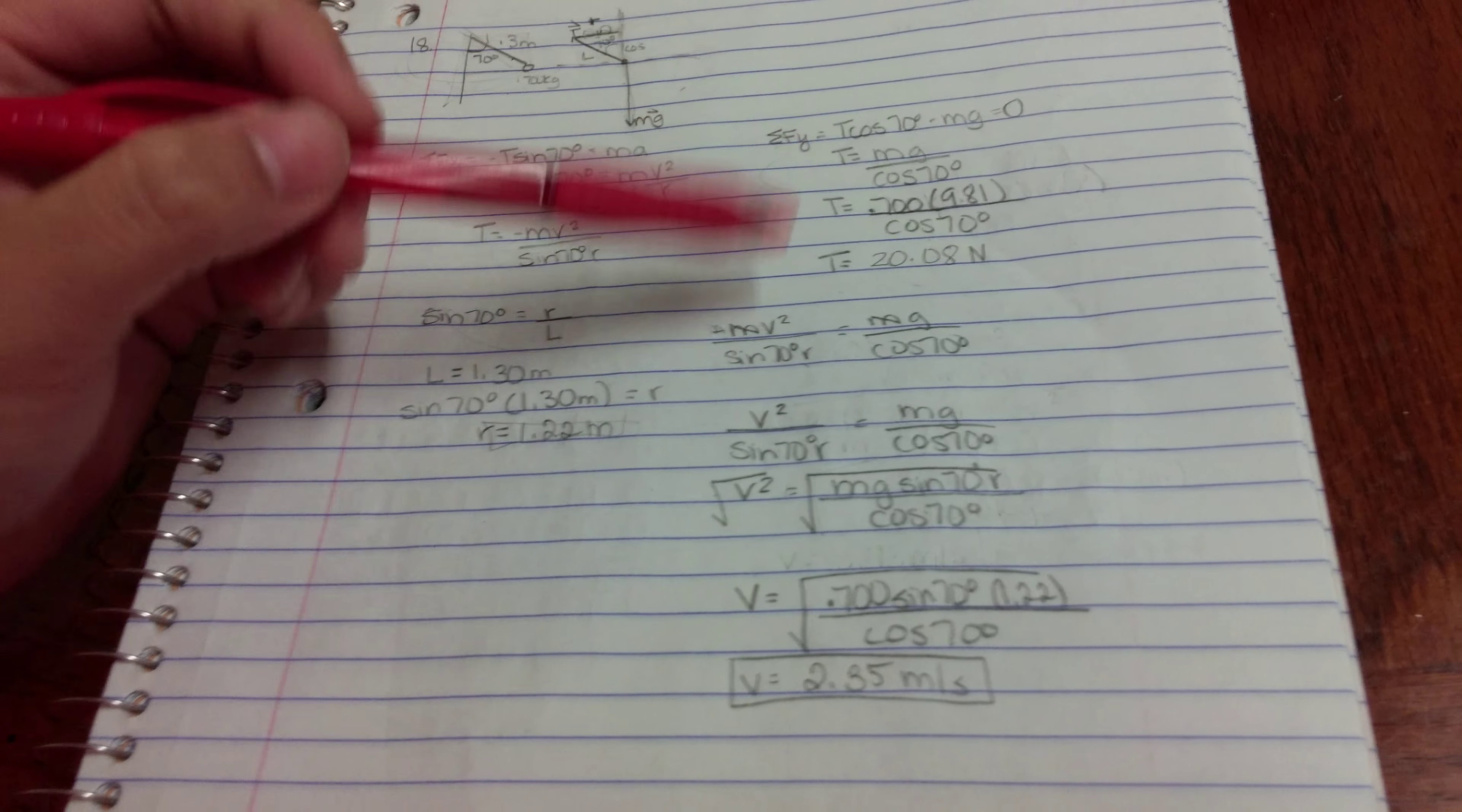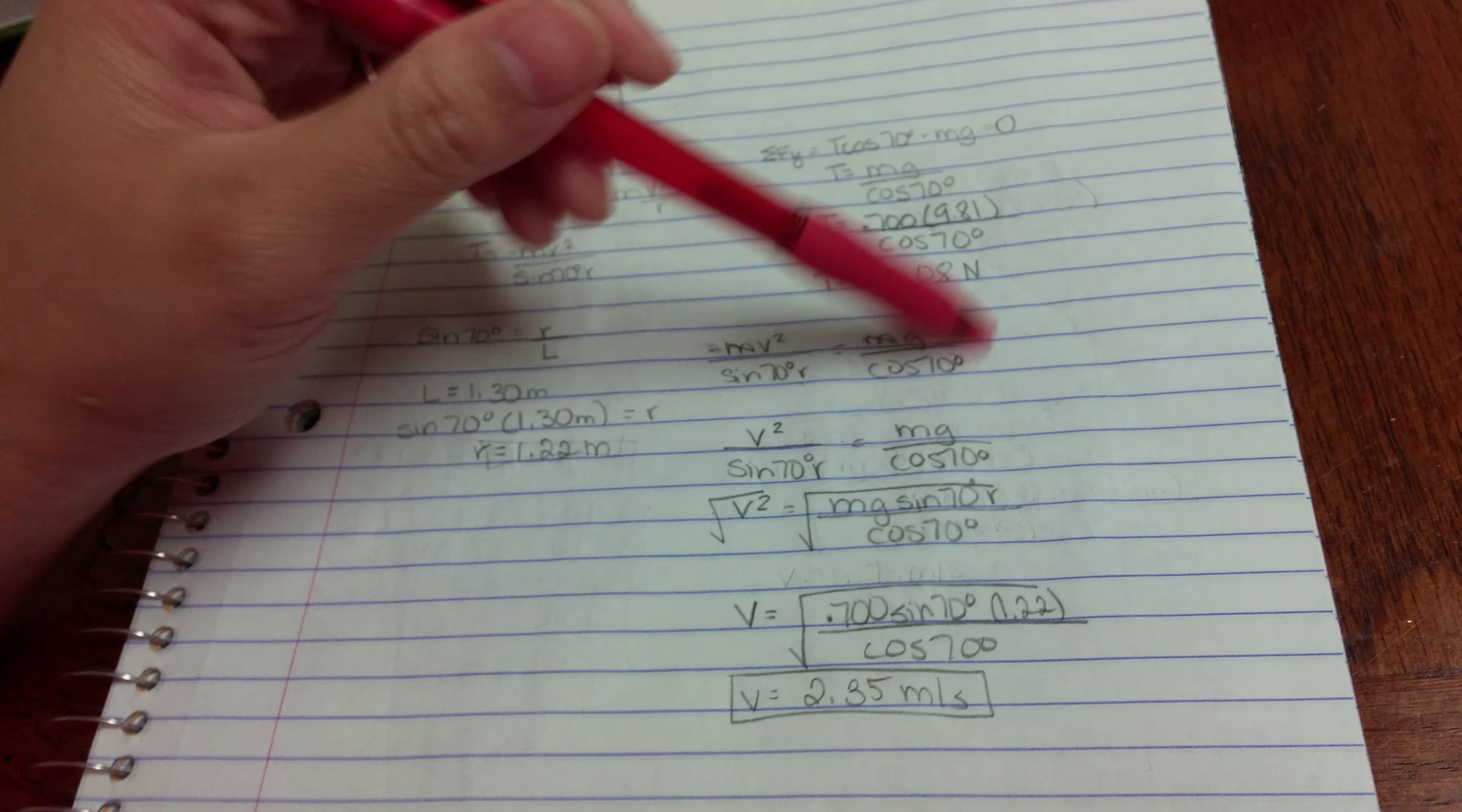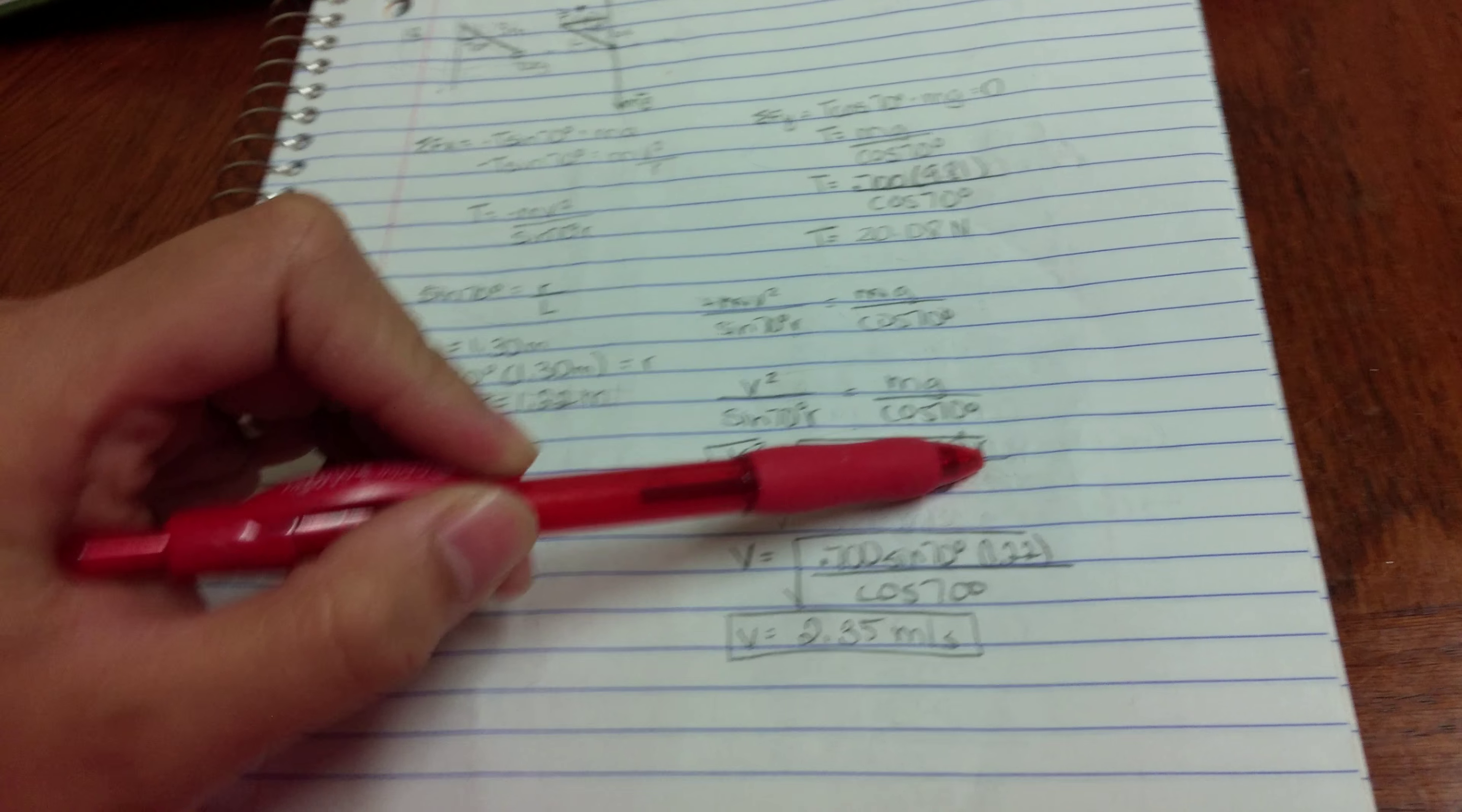The mass cancels out. And since this is squared right here, this negative shouldn't matter. So I'm solving for v. Multiply sine of 70r to the other side and then square root both sides. And I got v by itself. V equals square root of mg sine 70r over cosine of 70. I don't know r yet, but I can solve for r.